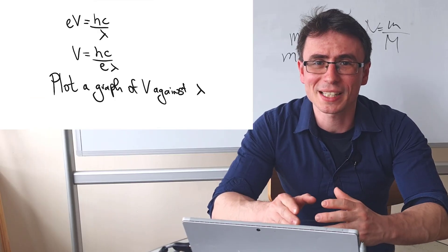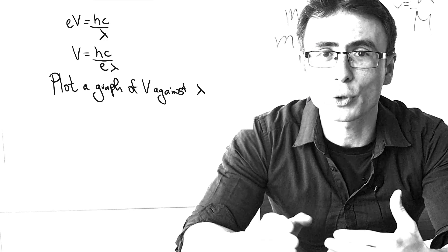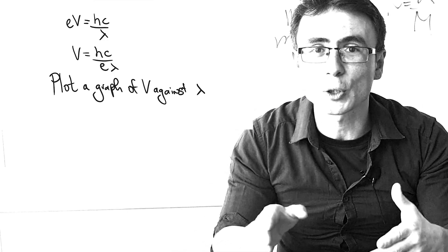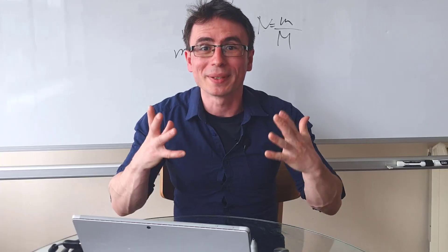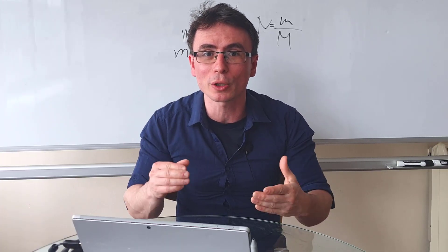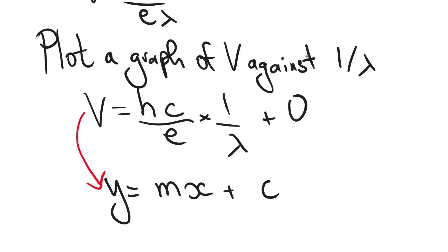When describing an experiment with linear analysis, lots of people choose to plot simply a graph of the two quantities that were measured. But sometimes we need to plot a graph of, let's say, voltage against one over the wavelength rather than the wavelength, or the time period squared rather than the time period.